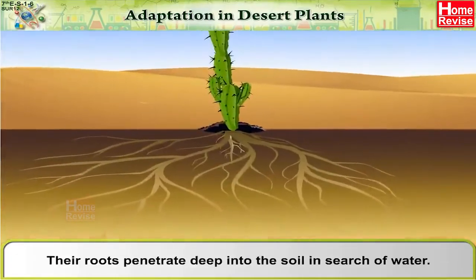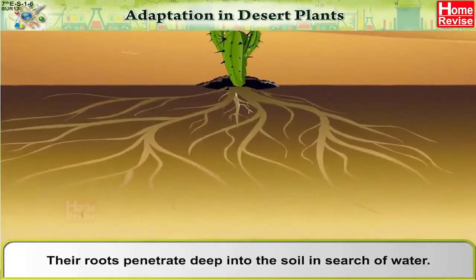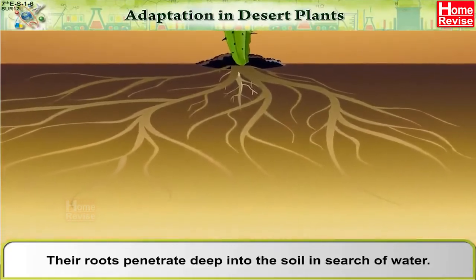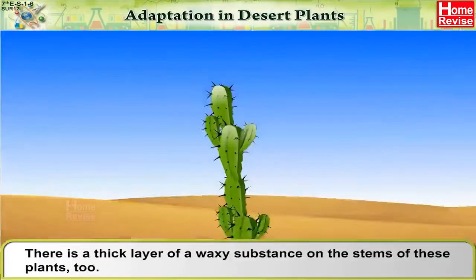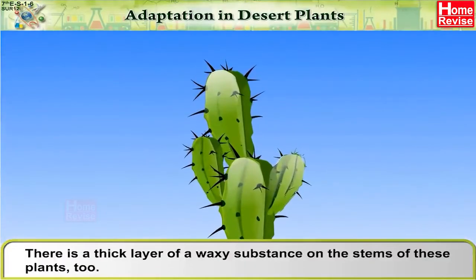The roots of desert plants penetrate deep into the soil in search of water. There is also a thick layer of a waxy substance on the stems of these plants.